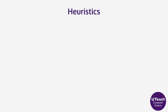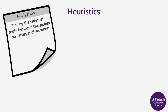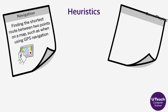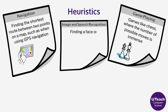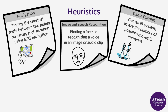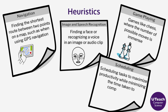Here are some examples of problems that can be solved using heuristic algorithms. One: Navigation — finding the shortest route between two points on a map, such as when using GPS navigation. Two: Game playing — games like chess, where the number of possible moves is immense. Three: Image and speech recognition — finding a face or recognizing a voice in an image or audio clip. Four: Scheduling.